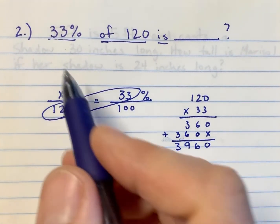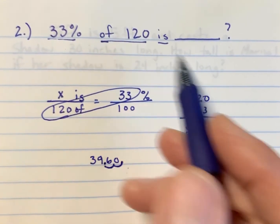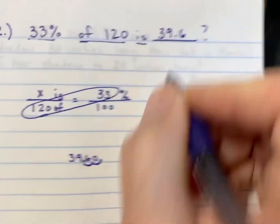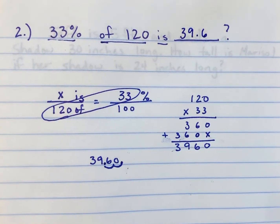So, now I found out that 33% of 120 is 39 and 6 tenths. All right, off to the next.